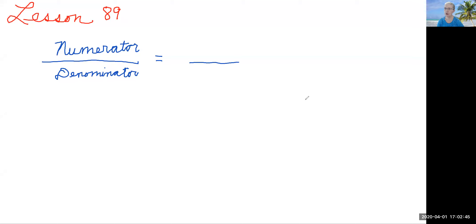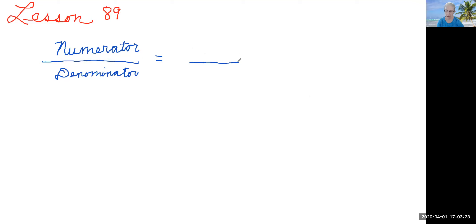We're going to start with a little review of what numerator and denominator means. If you look at the whiteboard I have up here, do you remember what numerator means? It's one of your flashcards. Numerator is the top number of a fraction and it means how many parts of the whole. And do you remember what denominator means? Denominator is the bottom number of a fraction and it means the total number of parts of the whole. So let's do a sample fraction.